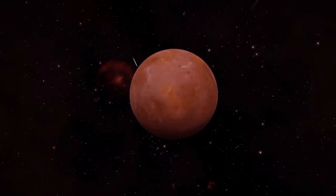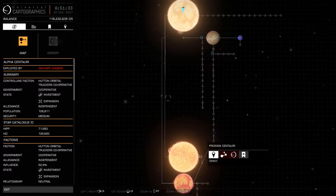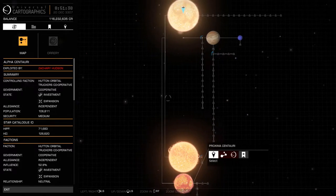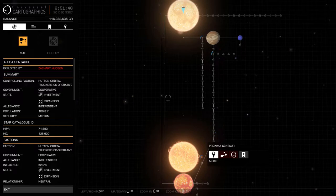Alpha Centauri is the closest star system and closest planetary system to Earth's solar system at 4.37 light-years from the Sun. It is a triple star system consisting of three stars: Centauri A, Centauri B, and Centauri C or Proxima Centauri.